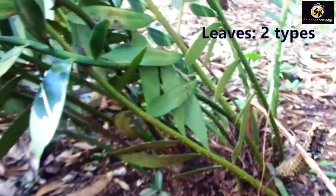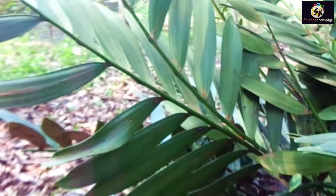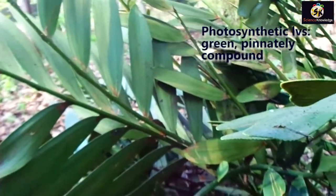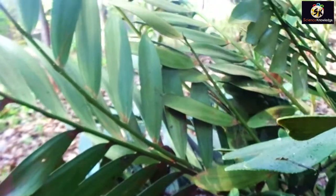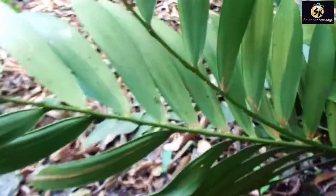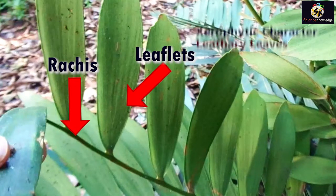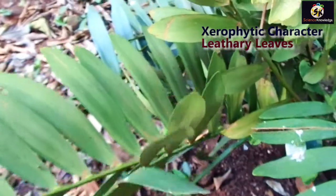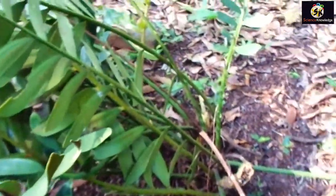There are two types of leaves. The green photosynthetic leaves, which are pinnately compound, have rachises and leaflets. Each leaflet is leathery in nature, and this is the characteristic of xerophytic plants. Basically, gymnosperms are xerophytic.